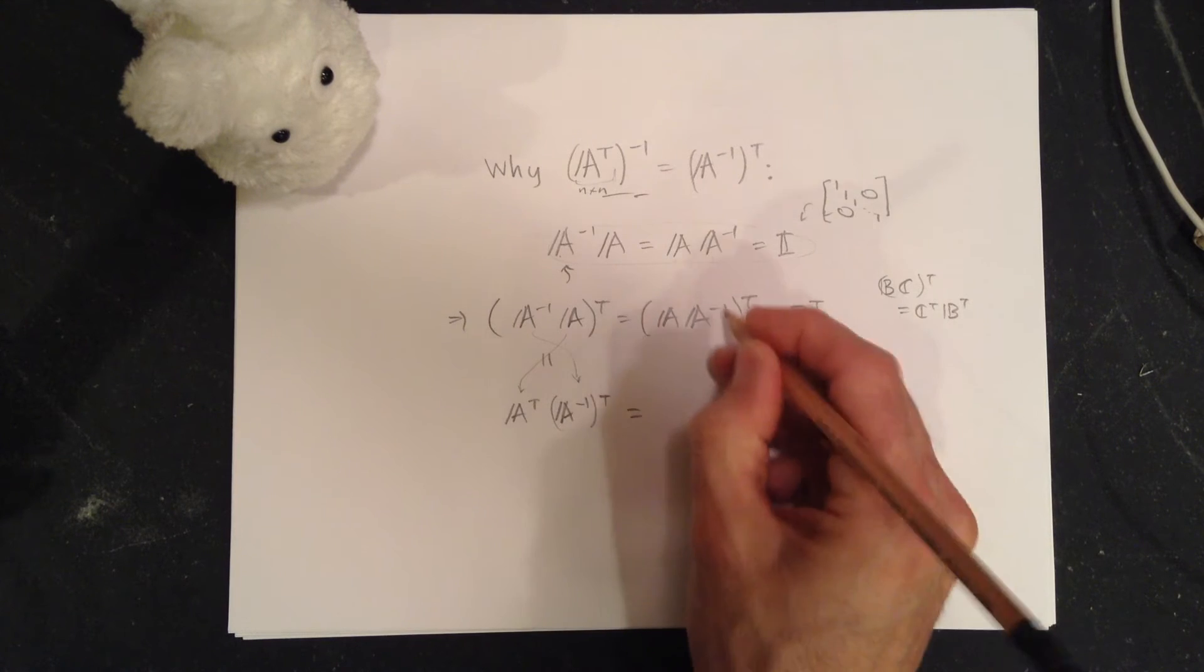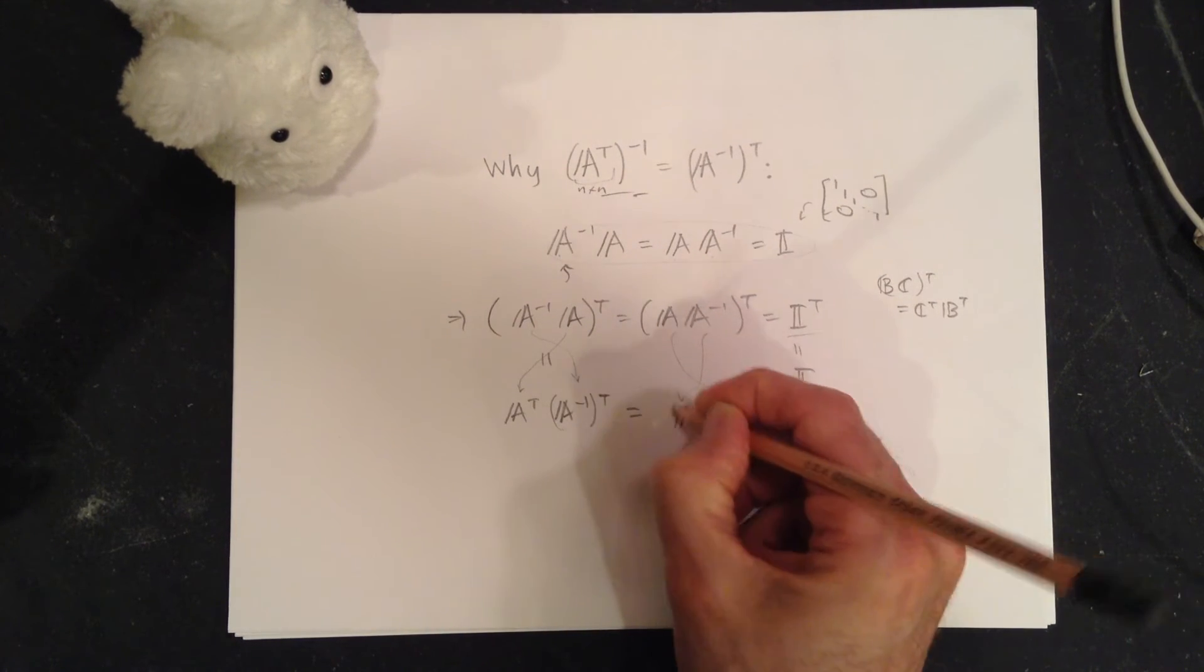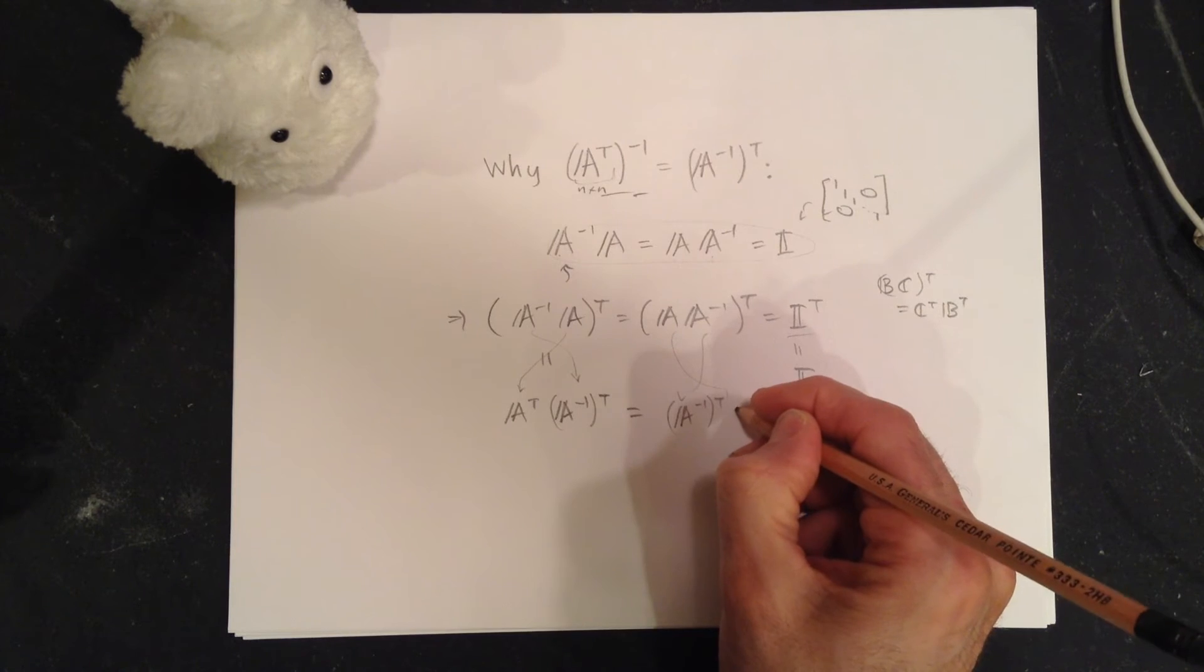This one equals, swap the order: (A^(-1))^T and A^T.